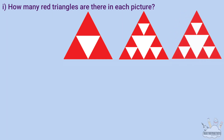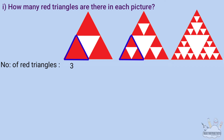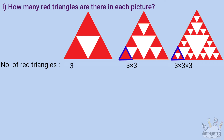The first question: how many red triangles are there in each picture? The first picture has 3 red triangles. The second picture has 3 × 3 = 9 red triangles. The third picture has 3 × 3 × 3 = 3³ = 27 red triangles.